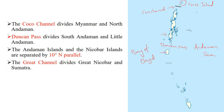This is the 10 degree north latitude, also known as the 10 degree channel. It separates the Andaman group of islands from the Nicobar group of islands. Another important channel south of Great Nicobar divides Great Nicobar Island from Sumatra Island, which is part of the Indonesian archipelago.